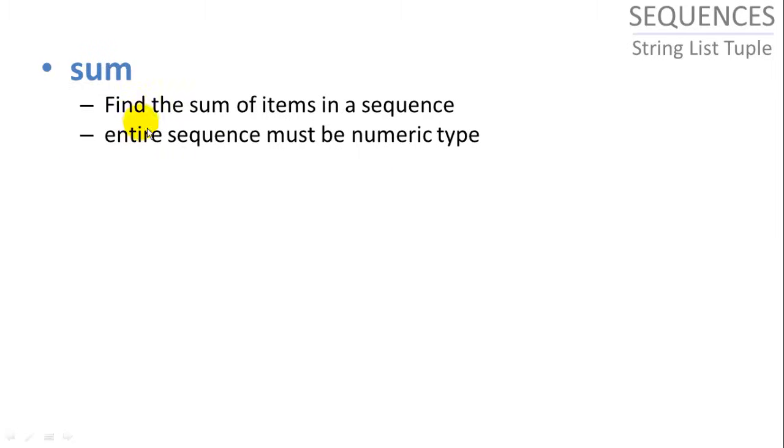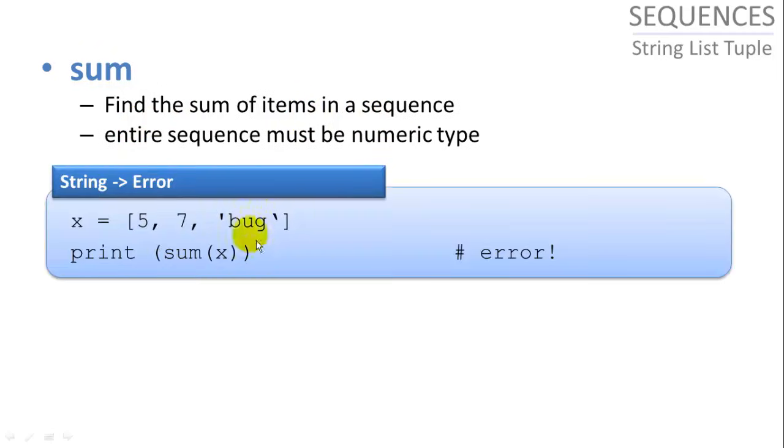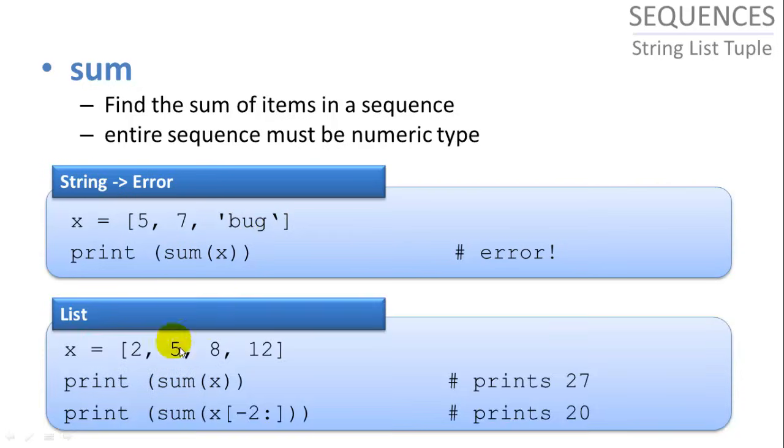Sum. We can find the sum of the items in a sequence if they're numeric type. So 5, 7, and bug is going to give us an error because bug is not a numeric type. But if we take the sum of 2, 5, 8, and 12, it's going to print 27. Or if we want to do a slice, we can say, hey, I just want the sum of the last two items of x. And this here will print 20.